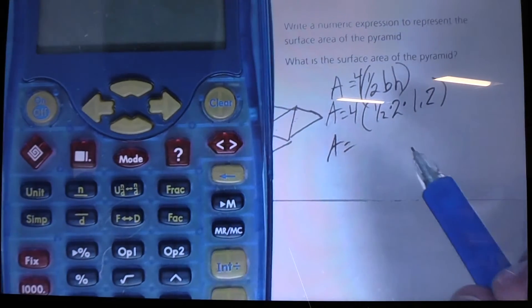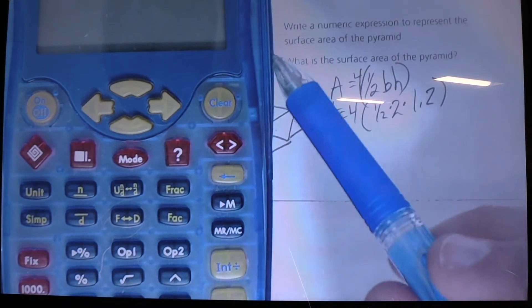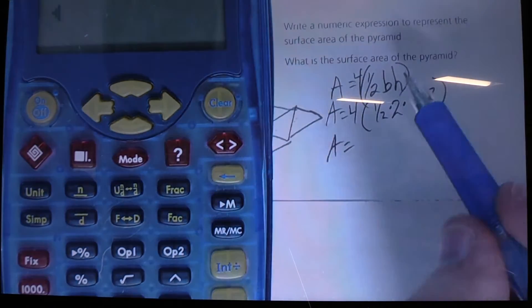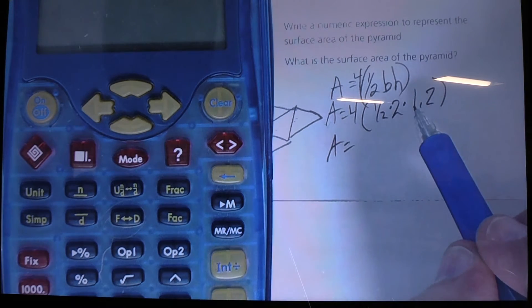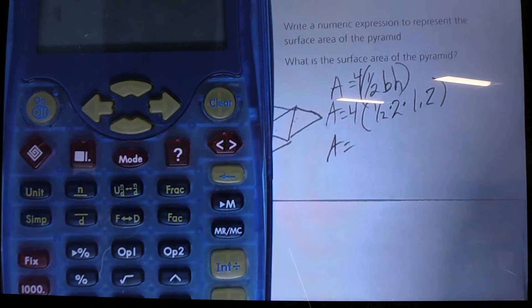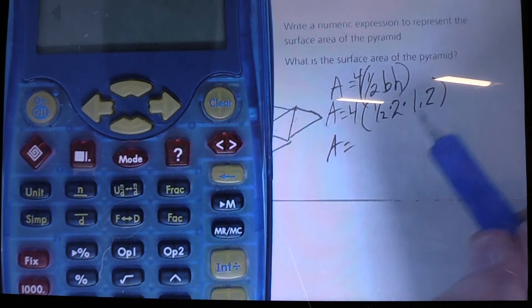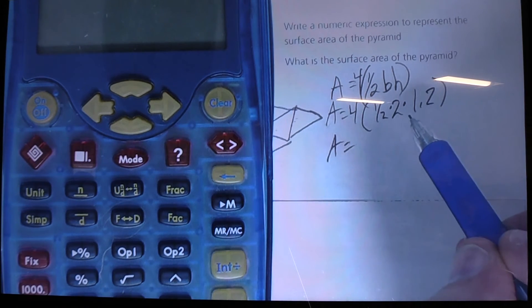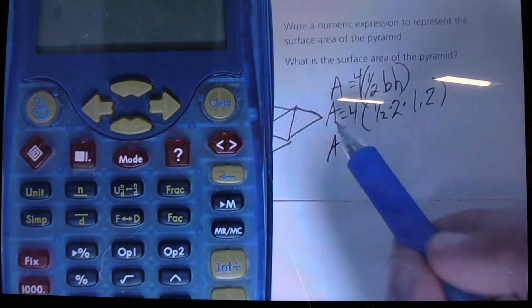Because I'll tell you right now, for some reason, these TI-15s, if you try to multiply 4 parentheses half times 2 times 1 and 2 tenths parentheses, it's going to give you an error. So, it's easy to just go ahead and find the product of these three factors and then multiply the product by 4.